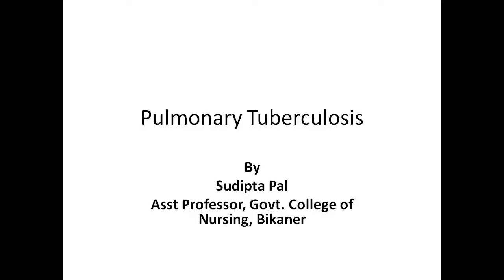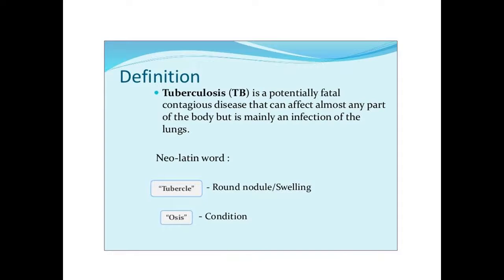Hello students, today's topic is Pulmonary Tuberculosis. Let us see the definition of tuberculosis. Tuberculosis is a potentially fatal, contagious disease that can affect almost any part of the body but is mainly an infection of the lung. It is derived from a new Latin word, tubercle, which means round nodule or swelling, and osis means condition.